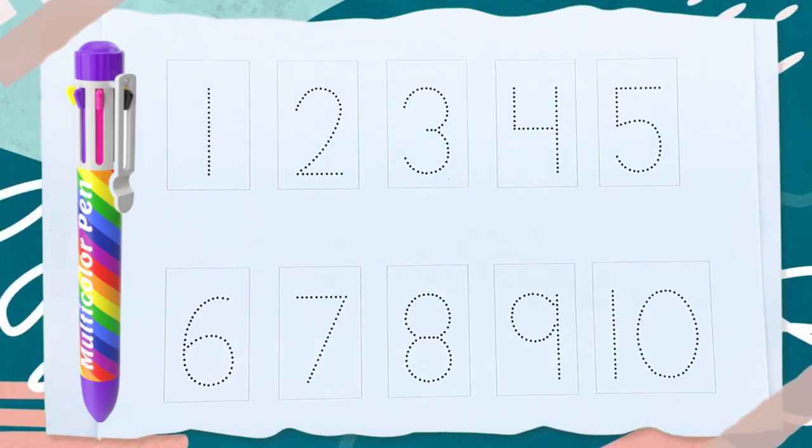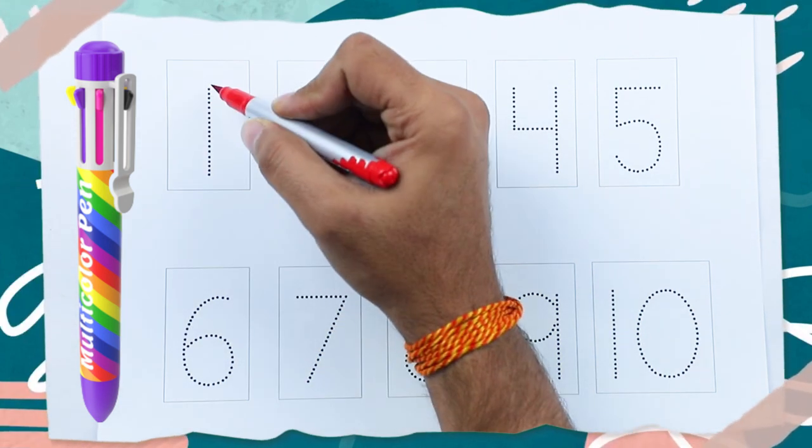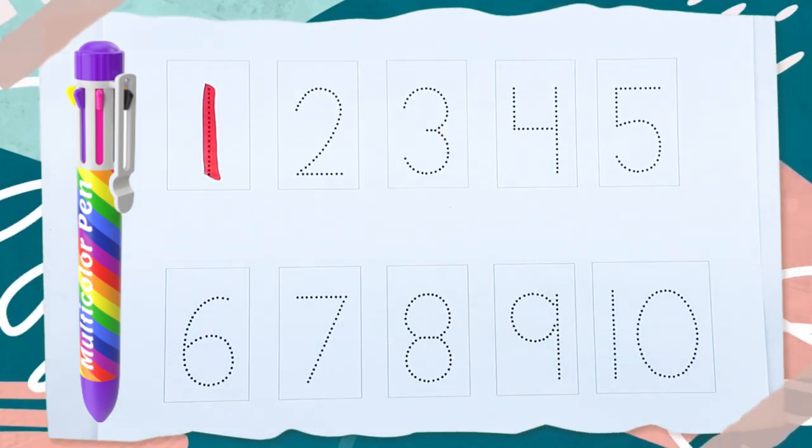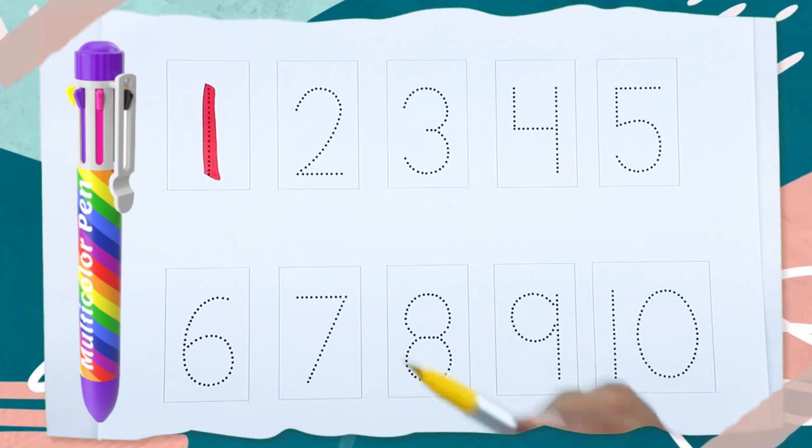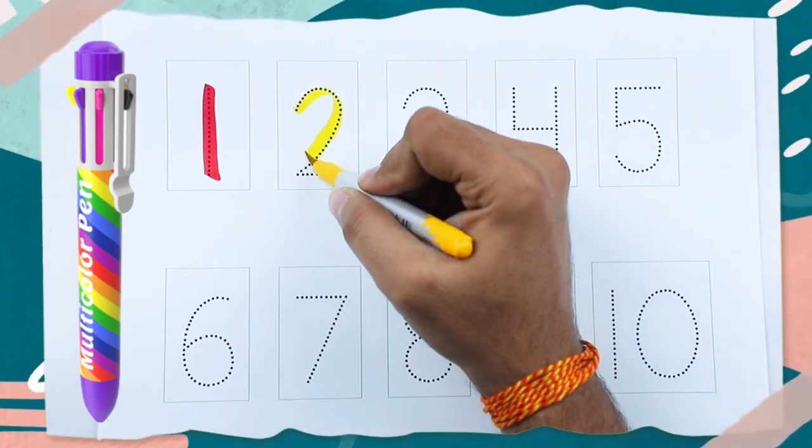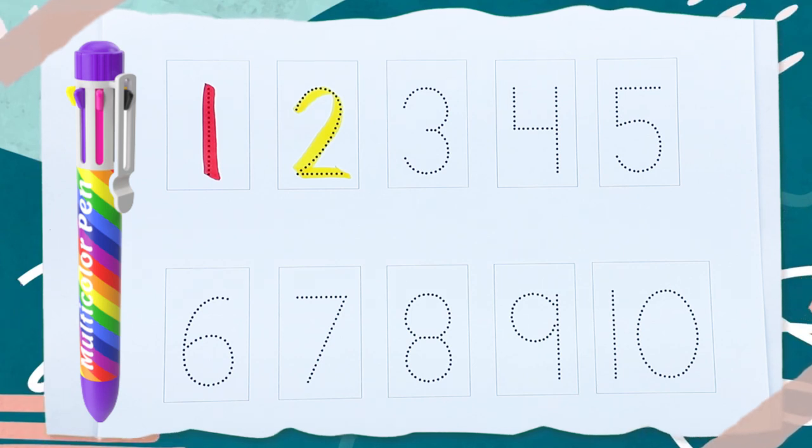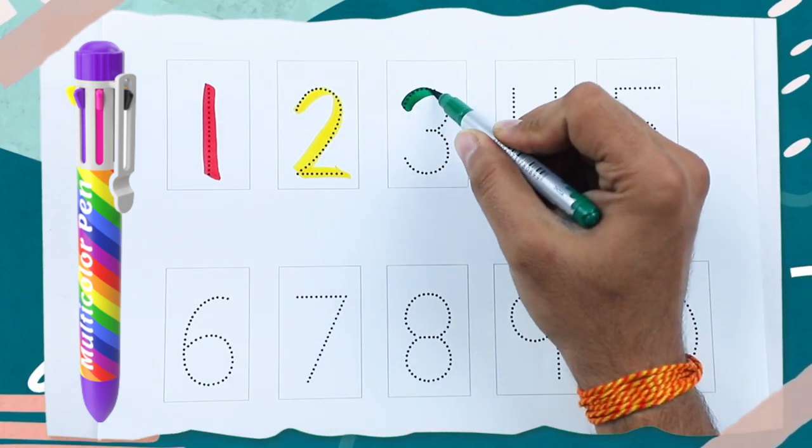So, let's start numbers learning. Number 1. 1, O-N-E, 1. Yellow color? 2. Number 2. Green color? Number 3.